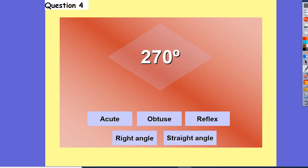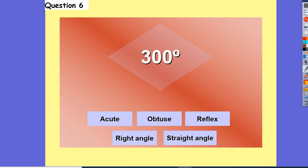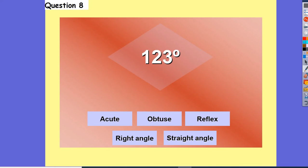270 degrees — that's a reflex angle. 12 degrees — that's an acute angle because it's little. 300 degrees — that's a reflex angle. 27 degrees — that's an acute angle. And finally, 123 degrees — that's an obtuse angle. So those are your types of angles.